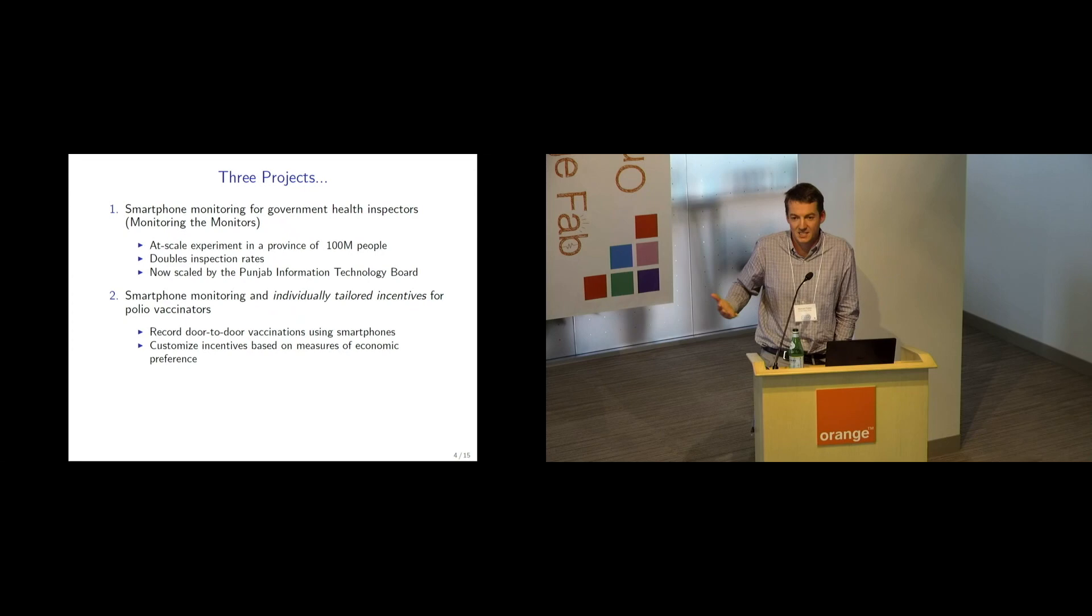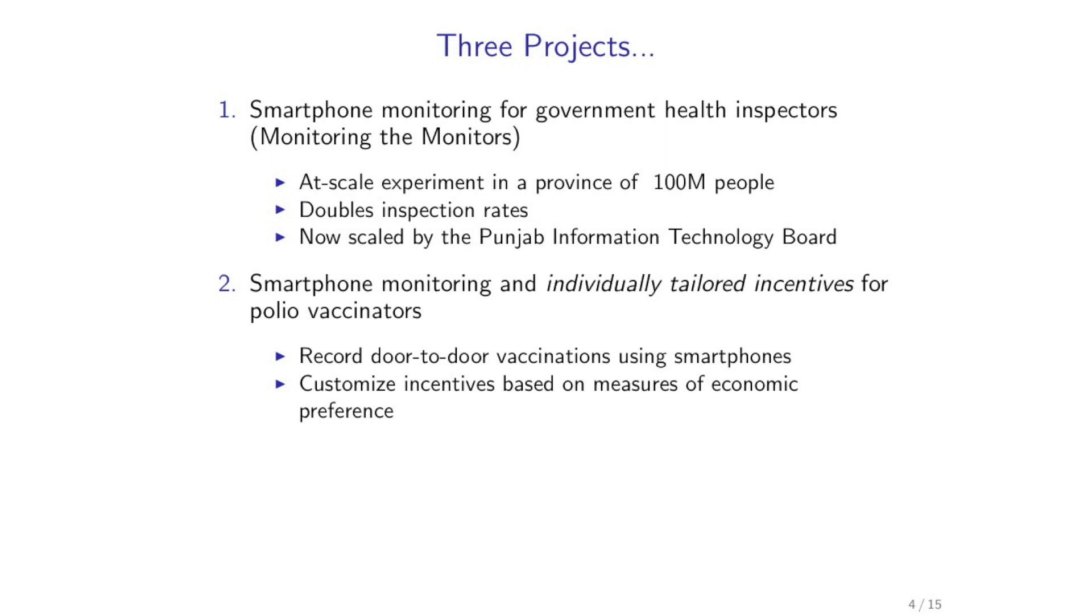So once we realized we could get that part right, we could use smartphones as a means of observing whether or not people in government were doing what we would hope that they were doing—in the first case, inspecting hospitals—we wanted to start to ask: well, can we use this as a means of writing performance contracts?